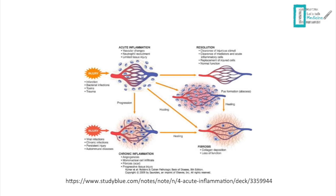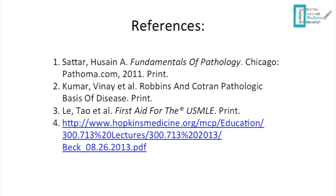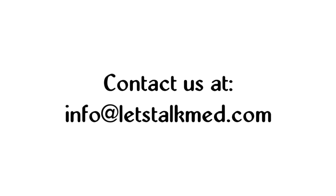To summarize the outcomes of acute inflammation: either full resolution and clearance of stimuli occurs, or pus formation leads to abscess, which may heal through fibrosis. Alternatively, progression to chronic inflammation leads to angiogenesis, fibrosis, and scarring — typically seen in viral infections, chronic infections, persistent injury, or autoimmune diseases. This concludes the lecture on neutrophil and macrophage roles in acute inflammation.